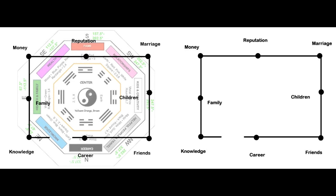To locate the points or areas in your space, first stand or imagine that you are standing in your doorway looking in. Directly in front of you is the reputation point, to your far right is your marriage point, to your far left is your money point, and so forth.